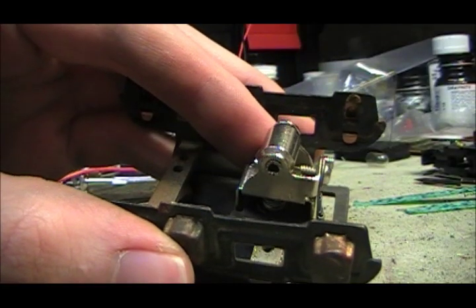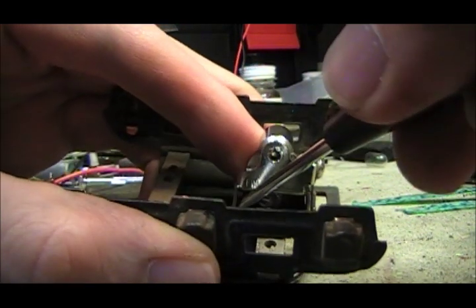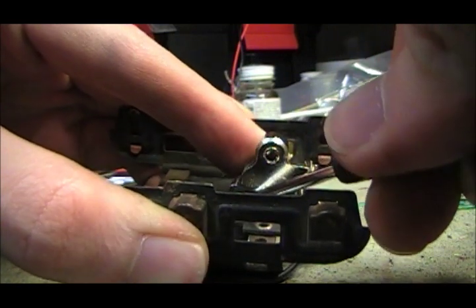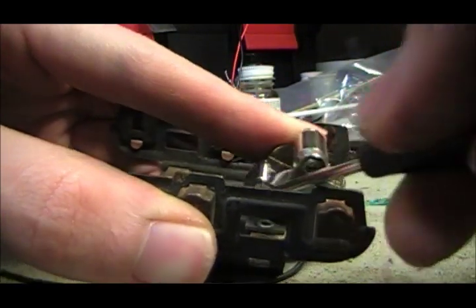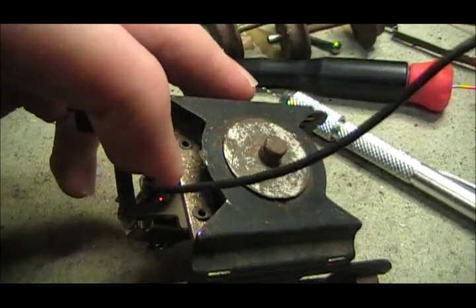To remove the pickup roller just go in there with a flat blade screwdriver and gently pry it open until it comes off. Just like that. And once the first side is released the other one is pretty easy to get off of there.